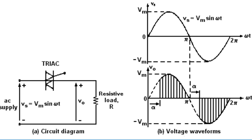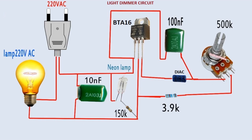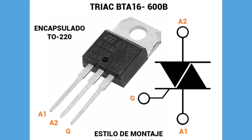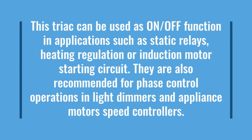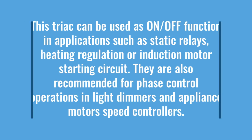Today we shall build a simple but powerful light dimmer circuit, which uses a TRIAC as a switch to switch lights on and off. This project is simple and cheap to make. We are going to use the BTA16 TRIAC series, which is suitable for general-purpose mains power AC switching and is available in through-hole and surface-mount packaging. This TRIAC can be used for on-off functions in applications such as static relays, heating regulation, or induction motor starting circuits, and is also recommended for phase control operations in light dimmers and appliance motor speed controllers.